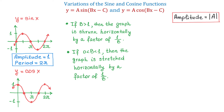To find the period of both these functions, we take 2 pi and multiply it by 1 over b, which is the same as 2 pi divided by b. So the formula for the period is: period equals 2 pi divided by b.